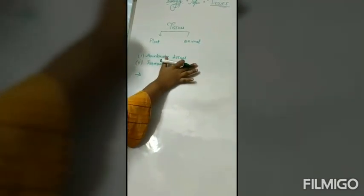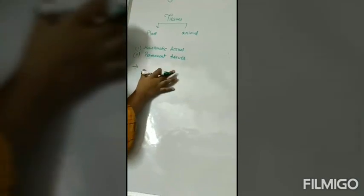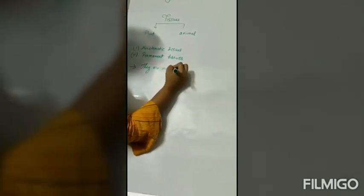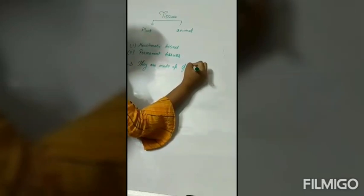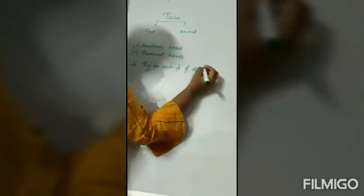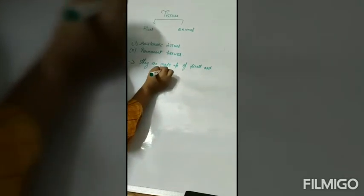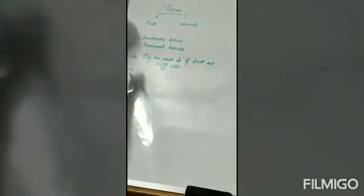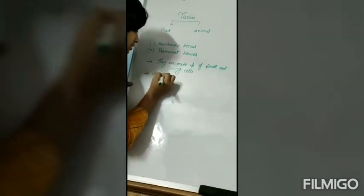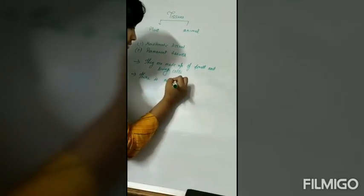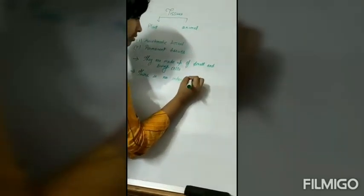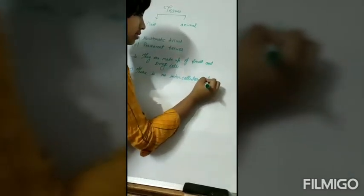Meristematic tissues have few characteristics. Meristematic tissues are formed by cells of similar kind. They have the ability to divide. First characteristic is, they are made up of small and living cells. There is no intercellular space between the cells.